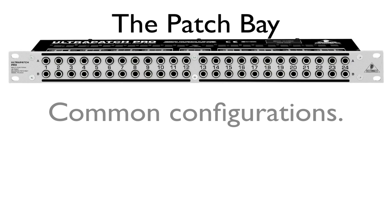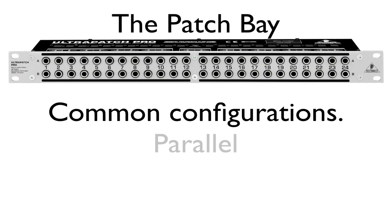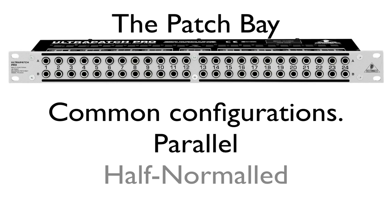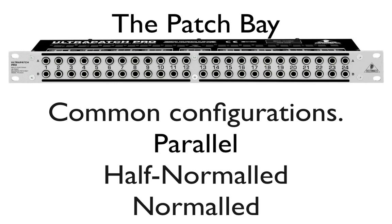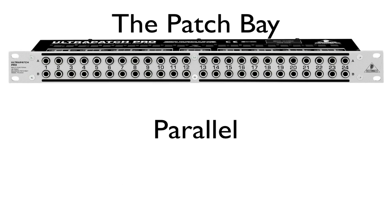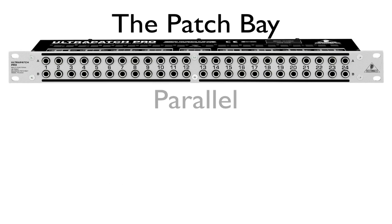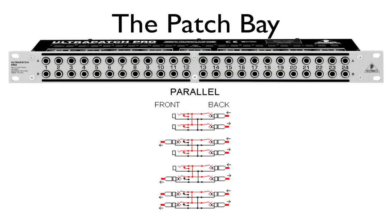Let's go ahead and cover the patch bay's most common configurations. There's actually three of them: parallel, half-normaled, and normaled. Right now we're going to talk about parallel. So in this mode, all terminals of one module are interconnected. You use this mode to split up and send one audio signal to several destinations.